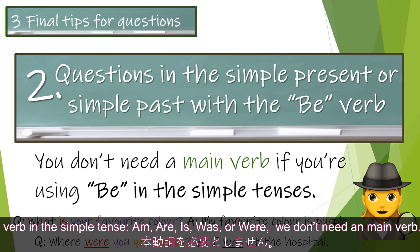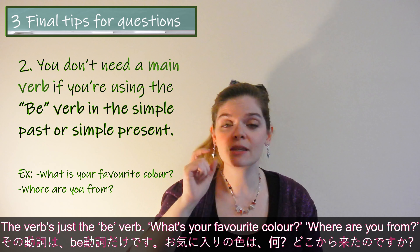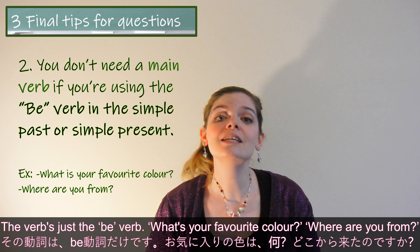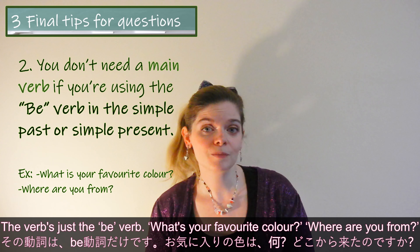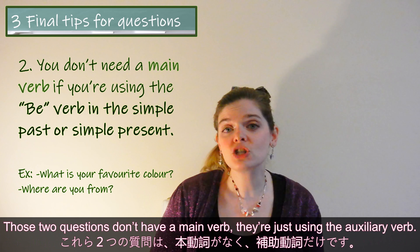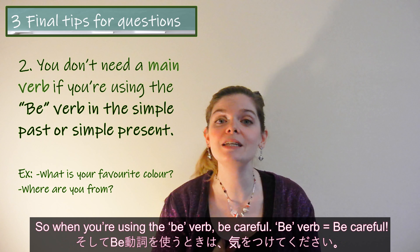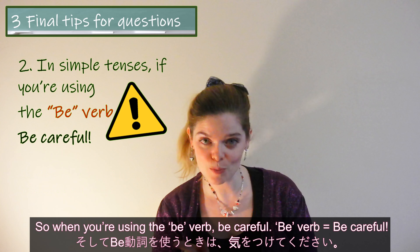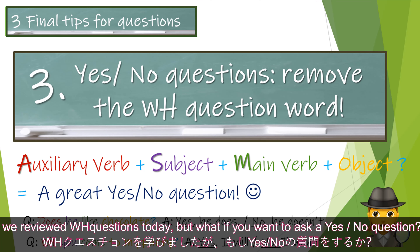One other point: many times when we use the be verb — am, is, was, or were — we don't need a main verb. The verb is just the be verb. For example: 'What is your favorite color?' and 'Where are you from?' Those two questions don't have a main verb; they're just using the auxiliary verb. So when you're using the be verb, be careful.